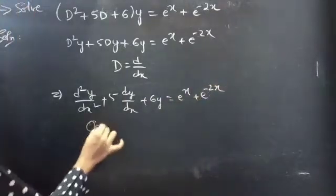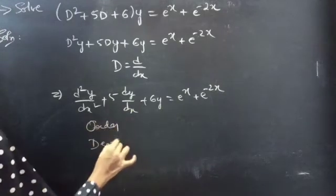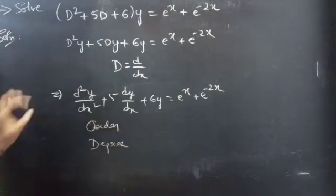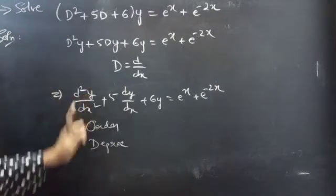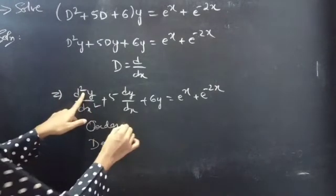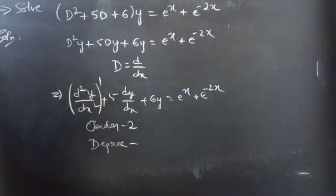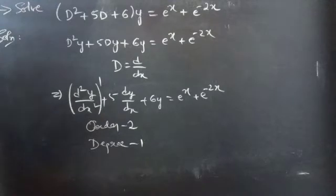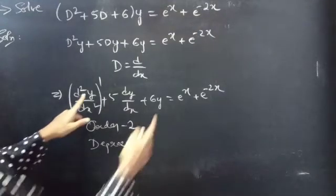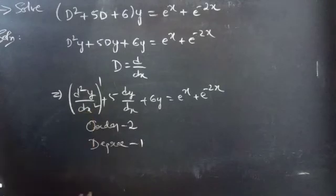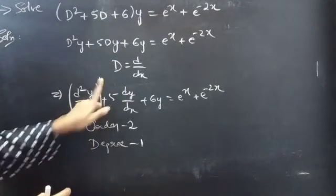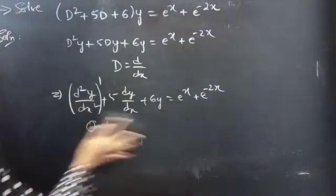We need to find the order and degree of the given equation. Identify the highest derivative — here d²y/dx² is our highest derivative, so the order is 2. The degree is the highest power of the highest derivative, which is 1, since there is no other d²y/dx² term with a different power.